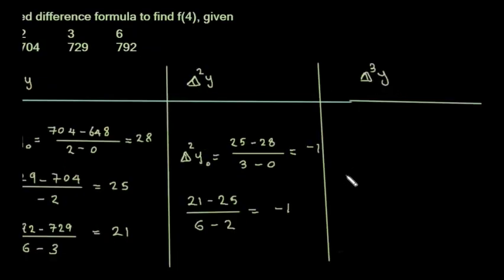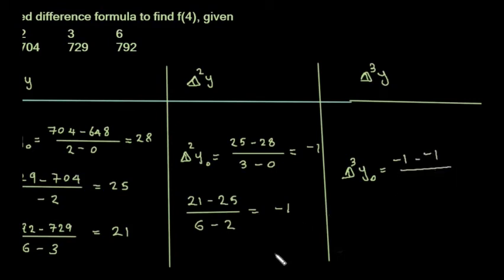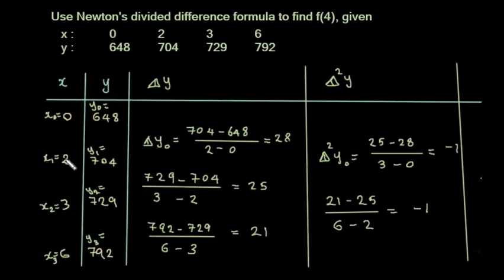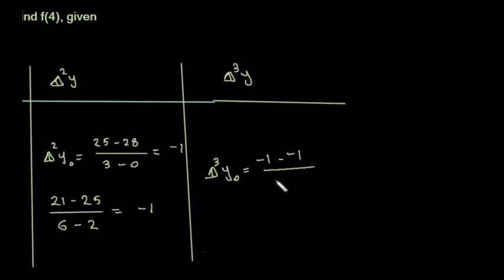Next, the third divided difference: Δ³y₀ = (minus 1 minus minus 1) divided by (6 minus 0) = 0.